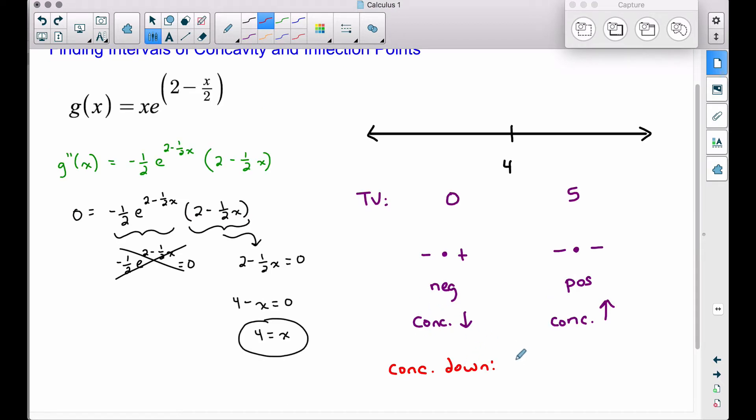Our function is concave down for values of x from negative infinity all the way up to four. We do not include four because when x equals four, the second derivative is equal to zero. So we don't want to include that. And our function is concave up for values of x that are greater than four. That's from four to infinity.